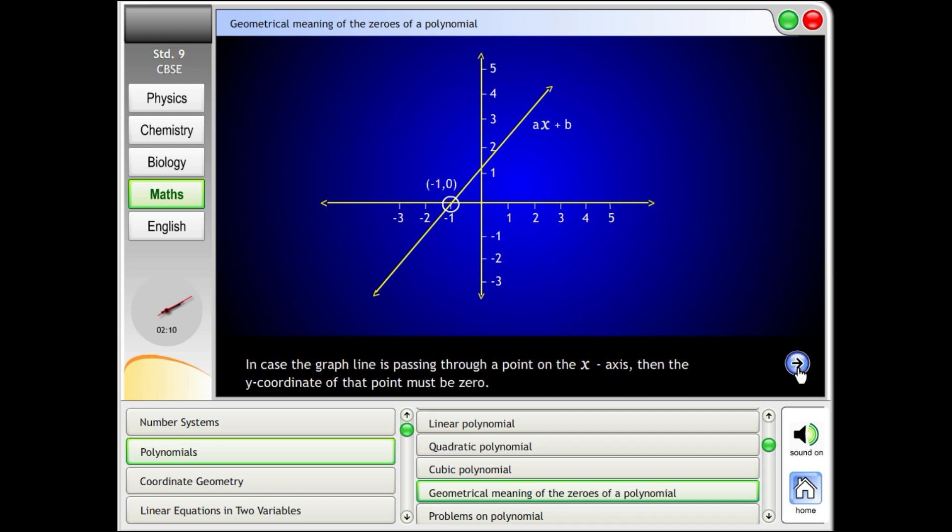In case the graph line is passing through a point on the x-axis, then the y-coordinate of that point must be zero.